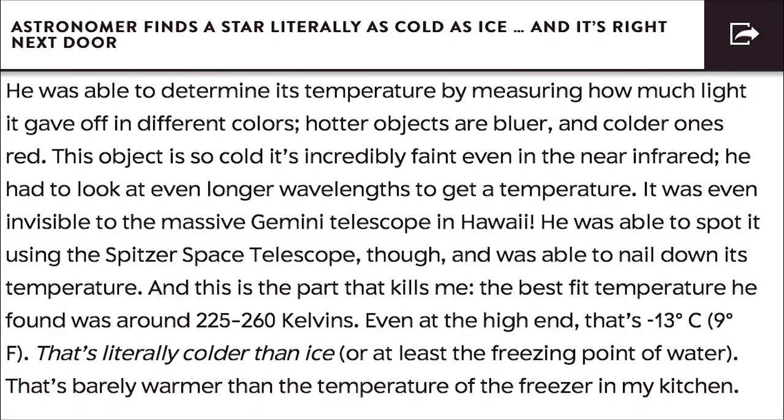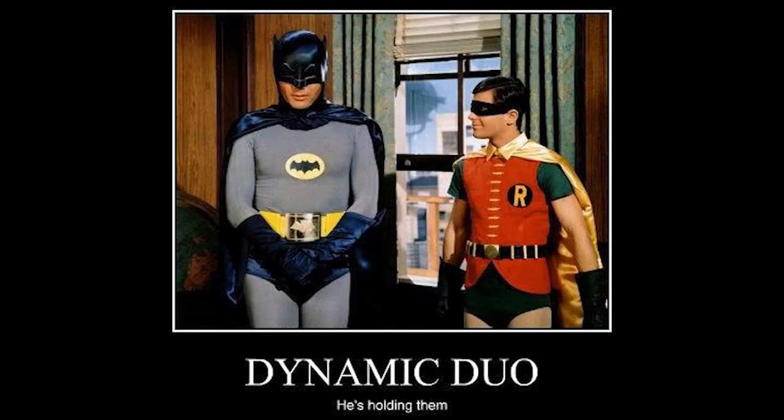This object is so cold it's incredibly faint even in the near infrared. It's why—like blue shifting is cold and red shifting is hot. Wait, yeah, okay, that works not at all. You see, so Luhman had to look at even longer wavelengths to get a temperature.